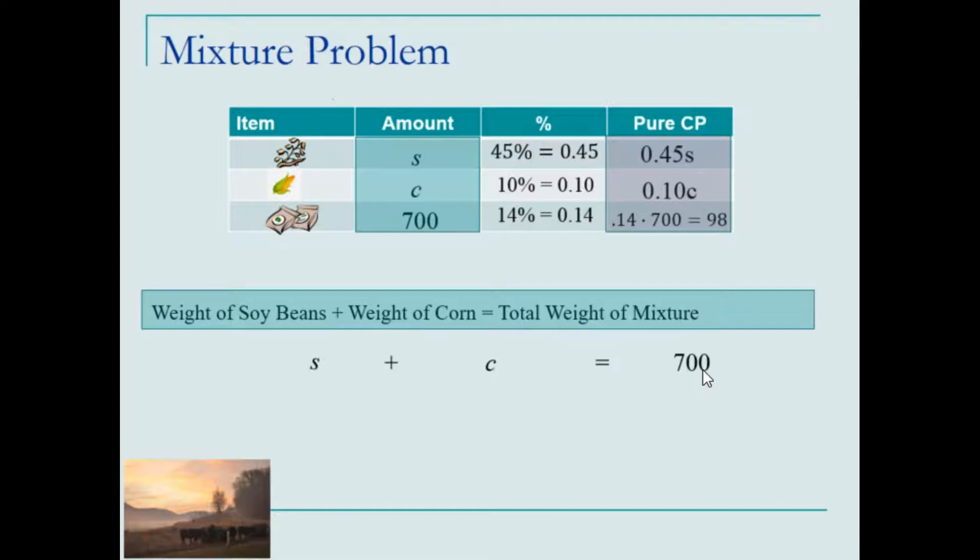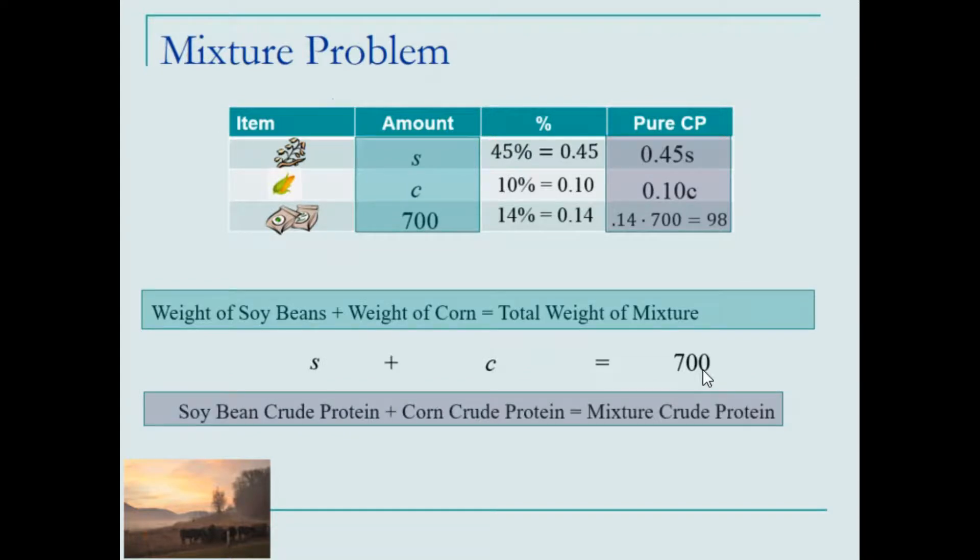For the second equation, which we're using the values in the final column, we'll take the crude protein from the soybean plus the crude protein from the corn will equal the total mixture's crude protein.